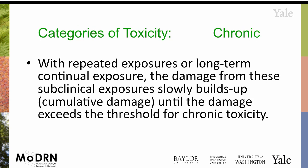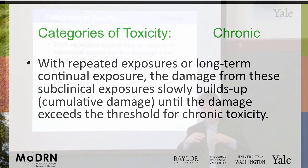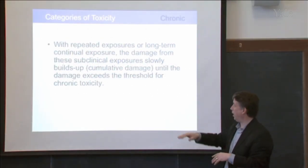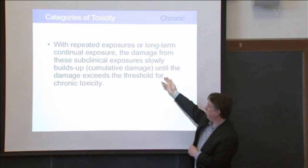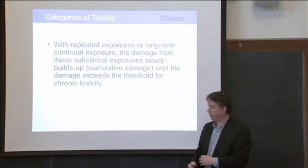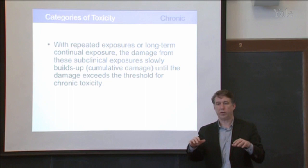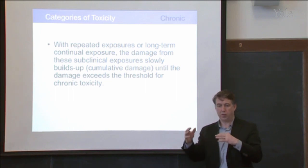When you start thinking about chronic toxicity, chronic toxicity is something that happens over a longer period of time. It can build up. Ranging from what we call subclinical exposures — these are lower doses — over time, sometimes you have cumulative damage that, over time, exceeds a certain threshold that brings about toxicity.